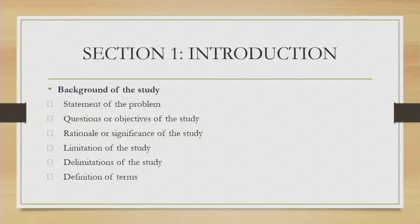Looking at section one, which is the introduction, we have the background of the study — you must give the background and explain where your study is coming from and why that study. You need to justify your study. Sub-sections include: statement of the problem, questions or objectives of the study, rationale or significance of the study, limitations of the study, and definitions of operational terms.